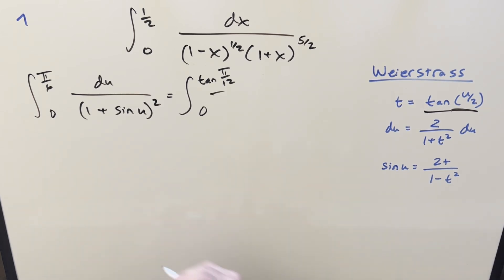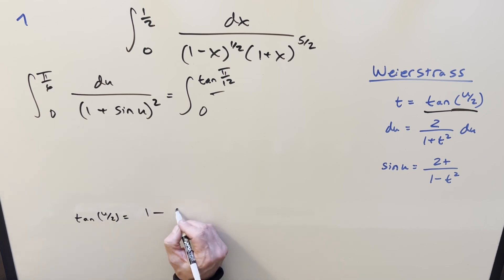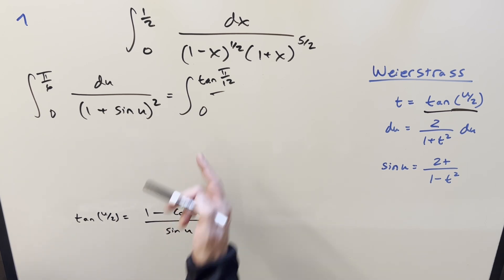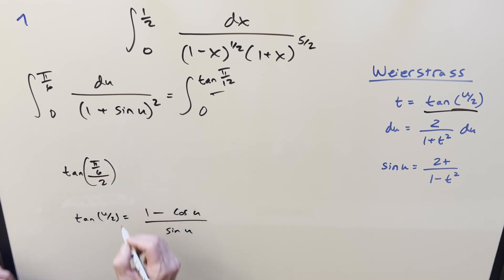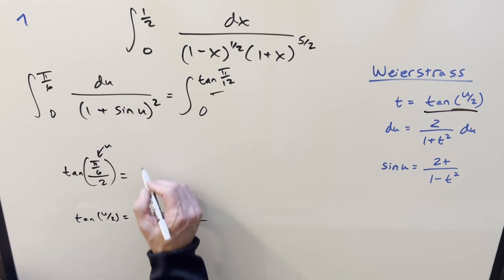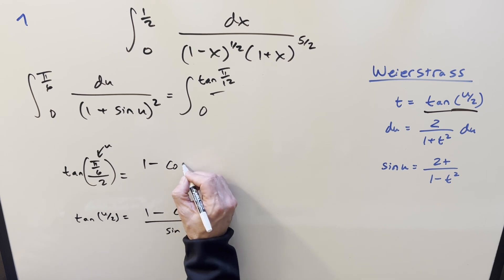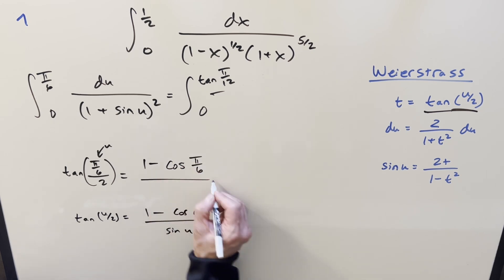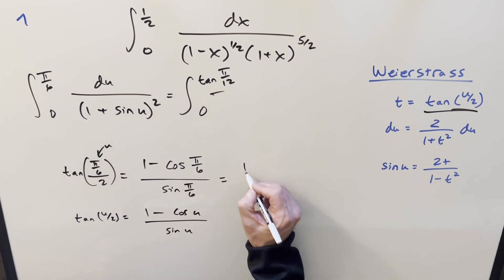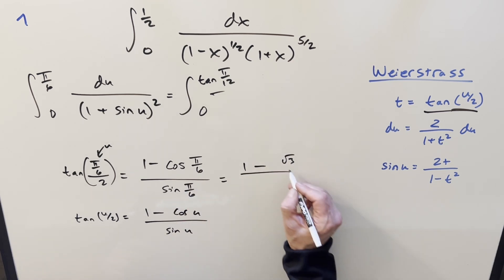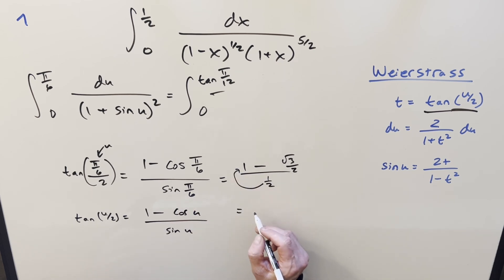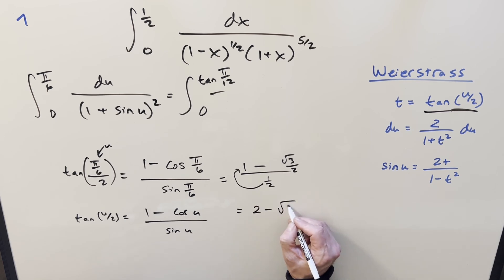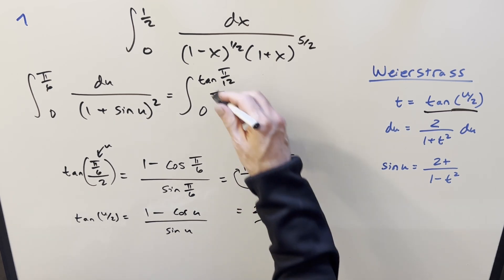Let's figure out tan(pi/12) using the half-angle formula for tangent: tan(u/2) = (1 minus cos(u)) / sin(u). Writing it as tan(pi/6 / 2) and plugging in: we have (1 minus cos(pi/6)) / sin(pi/6). Cosine of pi/6 is sqrt(3)/2, and sine of pi/6 is 1/2. Flipping and multiplying in, we end up with 2 minus sqrt(3). So our upper bound is 2 minus sqrt(3).